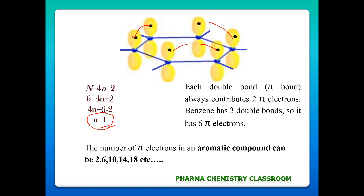Compounds having 2, 6, 10, 14, 18 pi electrons are aromatic, because solving Hückel's rule gives n = 0, 1, 2, 3, 4 respectively — all valid non-negative integers. Benzene satisfies all four criteria: it is planar, has sp2 hybridization making it fully conjugated, is cyclic, and satisfies Hückel's rule with 6 pi electrons. Therefore we confirm benzene is aromatic.